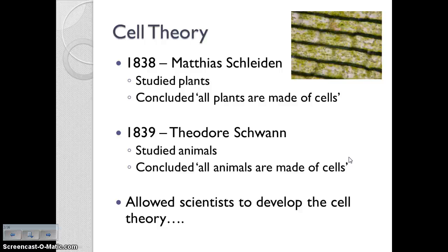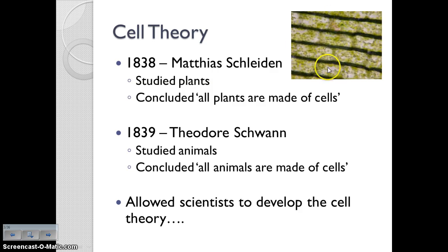In 1838, we have Matthias Schleiden, who was studying plants. He was putting them underneath a microscope and basically came to the conclusion that no matter what type of plant he looked at, it was made up of these smaller structural units called cells. So he concluded that all plants were made of cells. Then in 1839, Theodor Schwann was doing something similar but with animals, and he concluded that all animals are made up of cells.